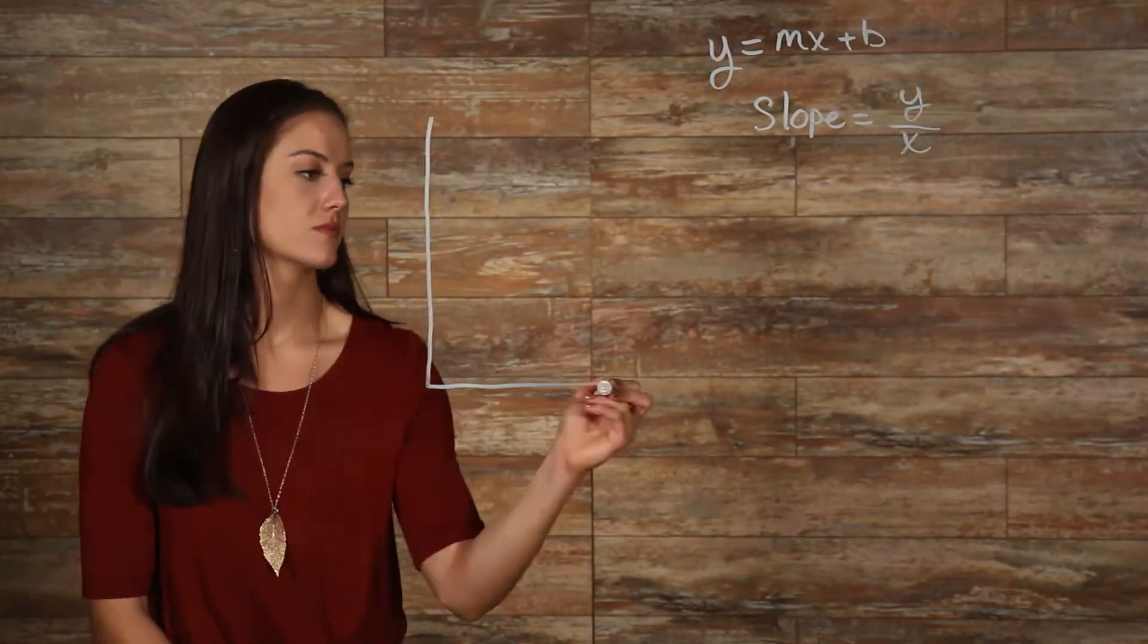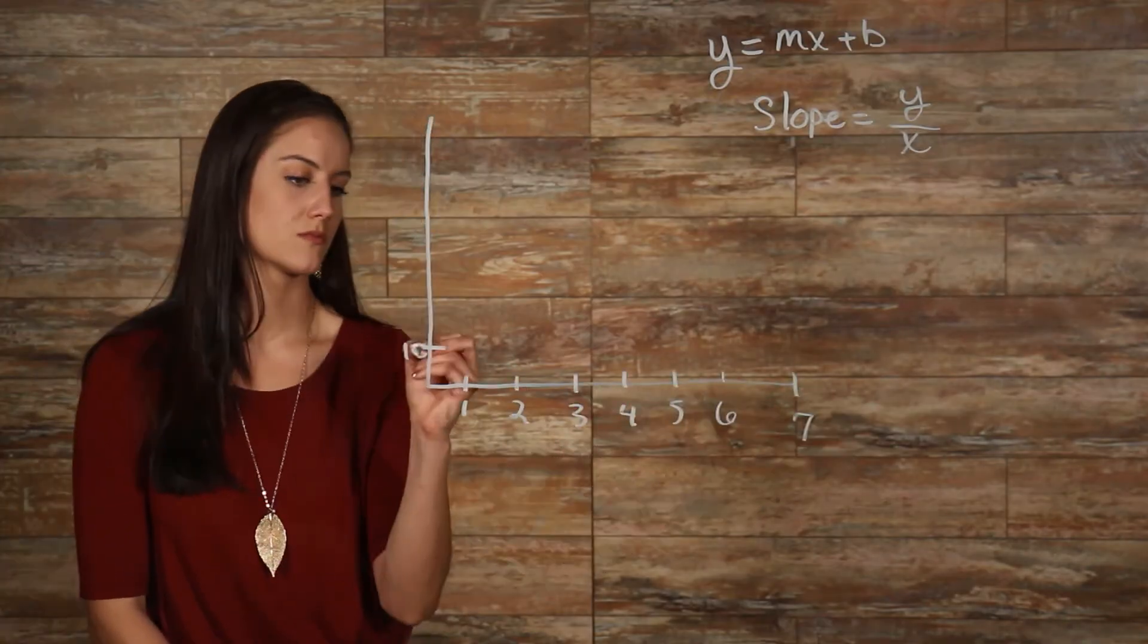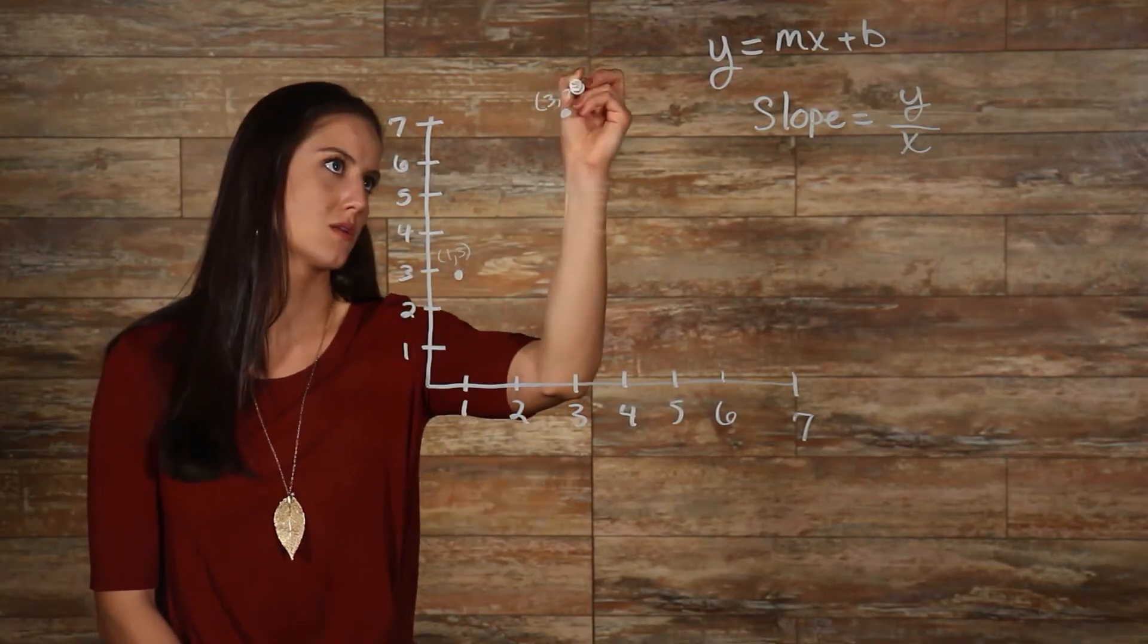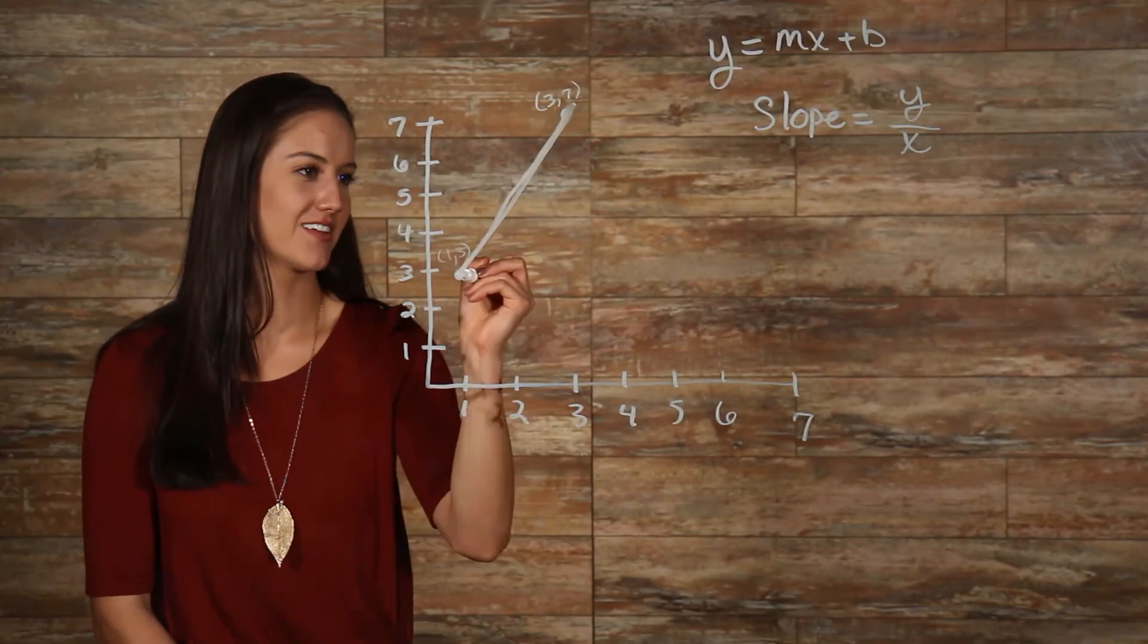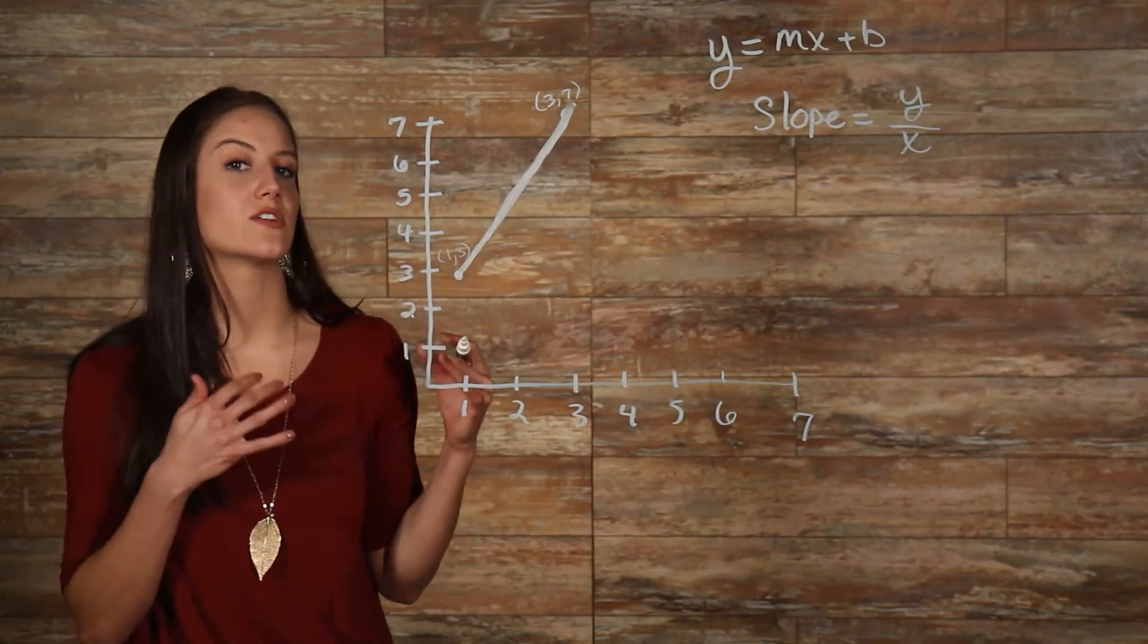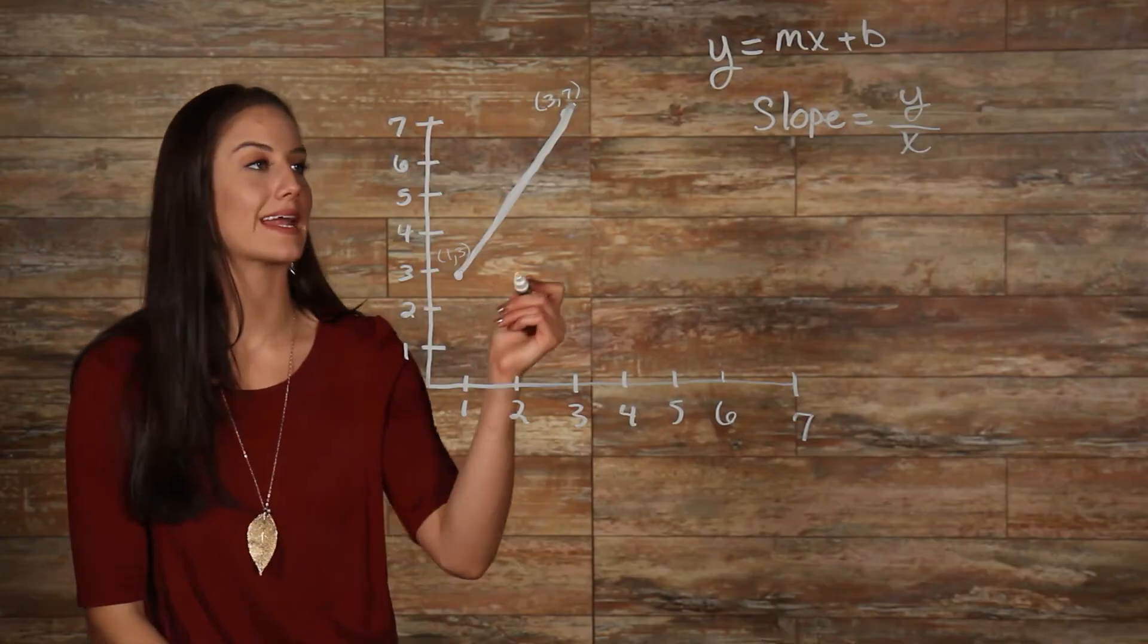We have our graph. So, we have two points on our line, 1 3 and 3 7.